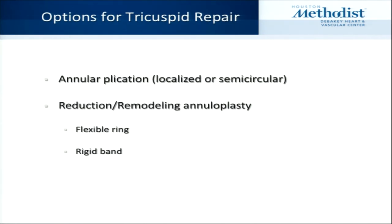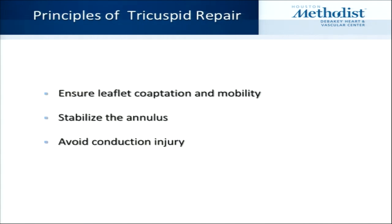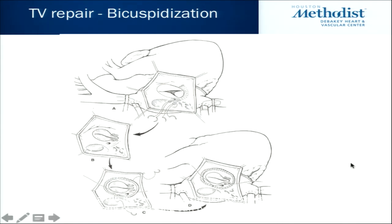What are the options for tricuspid repair? You can do an annular plication, or a reduction or remodeling annuloplasty using a flexible ring or a rigid band. You need to ensure leaflet coaptation and mobility, stabilize the annulus, and avoid conduction injury. An example is bicuspidization: the procedure involves imbrication of the posterior leaflet, going from three leaflets to two, effectively performing a reduction annuloplasty by pinching off that side of the valve.